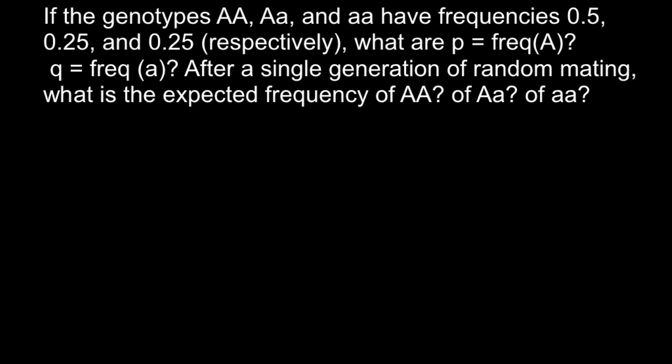Hi, today I prepared another video about population genetics and here is a problem. If the genotypes homozygous dominant, heterozygous, and homozygous recessive have frequencies 0.5, 0.25, and 0.25 respectively, what are p — the frequency of the dominant allele — and q — the frequency of the recessive allele — after a single generation of random mating? What is the expected frequency of the homozygous dominant, heterozygous, and homozygous recessive genotypes?